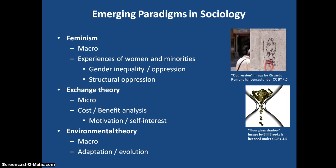Environmental theory is a macro-sociological perspective, meaning it is evaluating what is going on in the social world, such as organizations, systems, processes, etc. The focus of this theory is the effect people have on the social environment and physical environment. It does look at how the physical environment affects us, but the emphasis is on how the social world affects us.